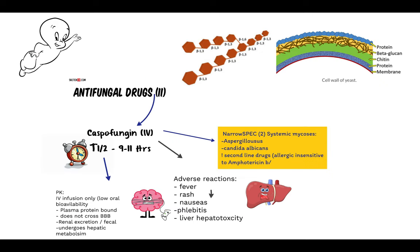In summary, Caspofungin's main mechanism of action is decreasing cell wall synthesis by beta-glucan inhibition. It has a 9 to 11 hour plasma half-life, undergoes slow metabolism by hepatocytes, does not cross the blood-brain barrier, is excreted both renally and fecally, and has a very narrow spectrum — echinocandins only.